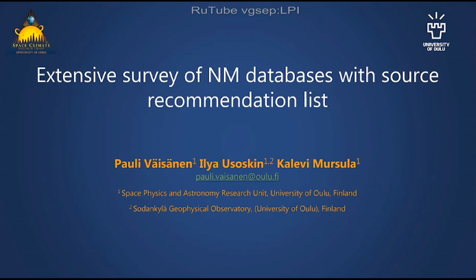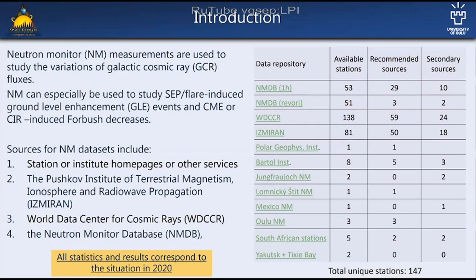My talk is about the NM Neutron Monitor data and this extensive survey we did on that. As you all know, neutron monitors are the main method of measuring galactic cosmic ray fluxes on Earth. They are used to study flares and GLEs and Forbush decreases and other heliospheric phenomena related to the sun.